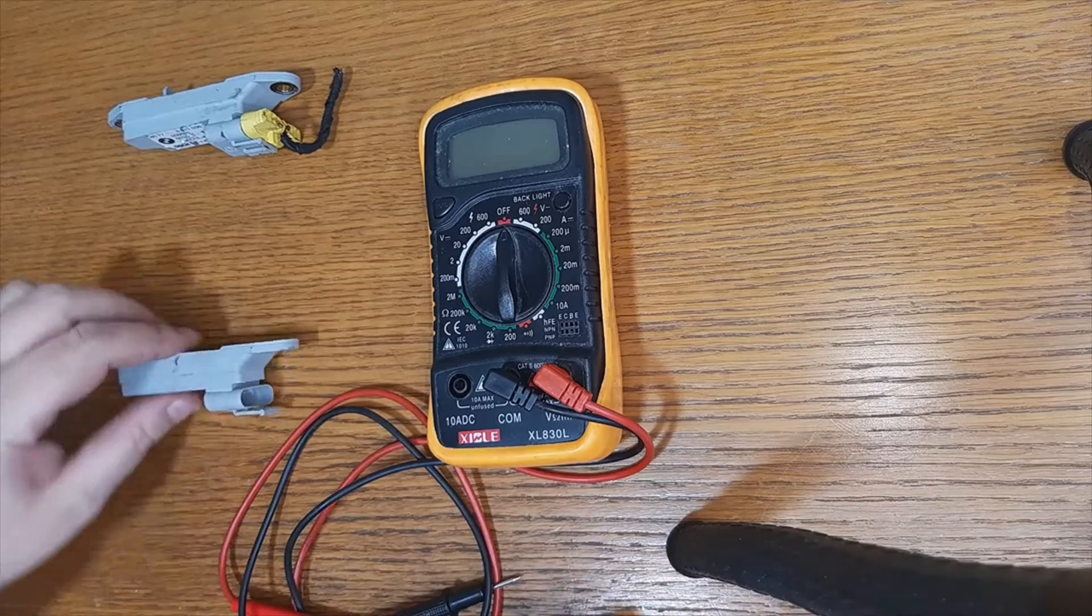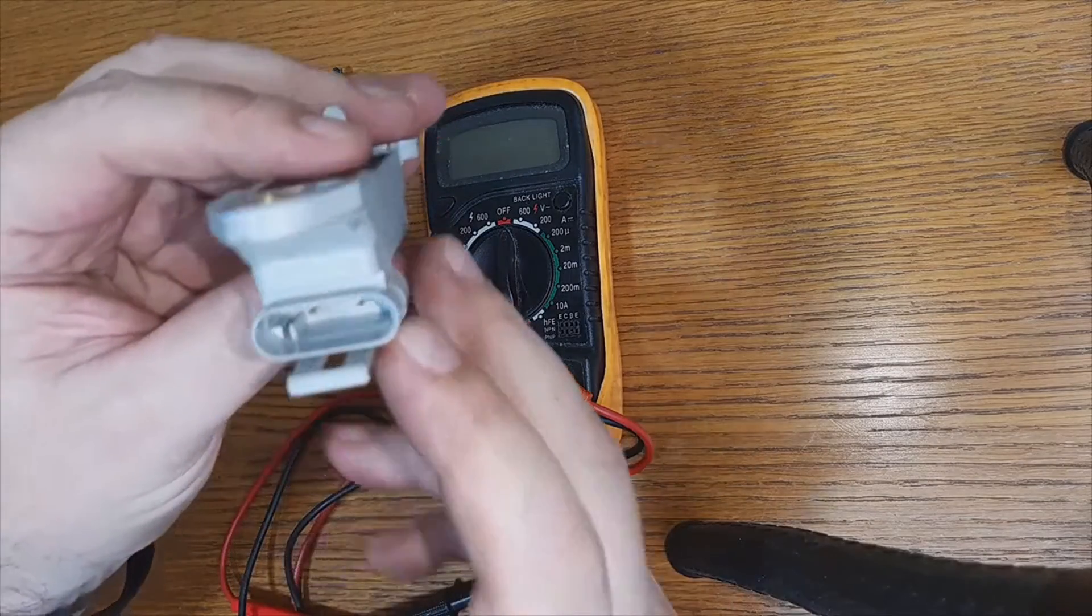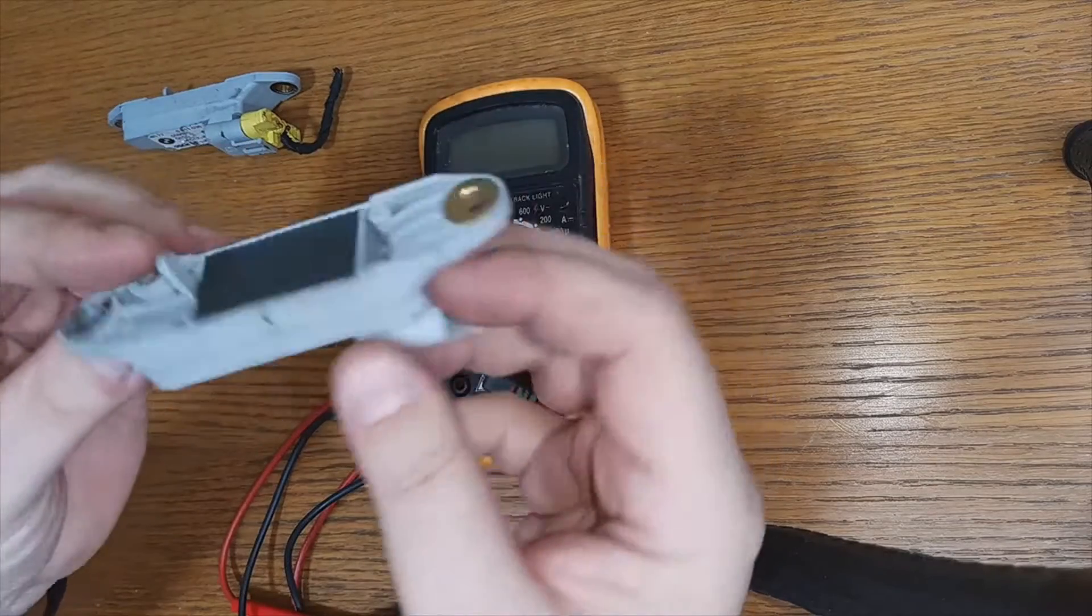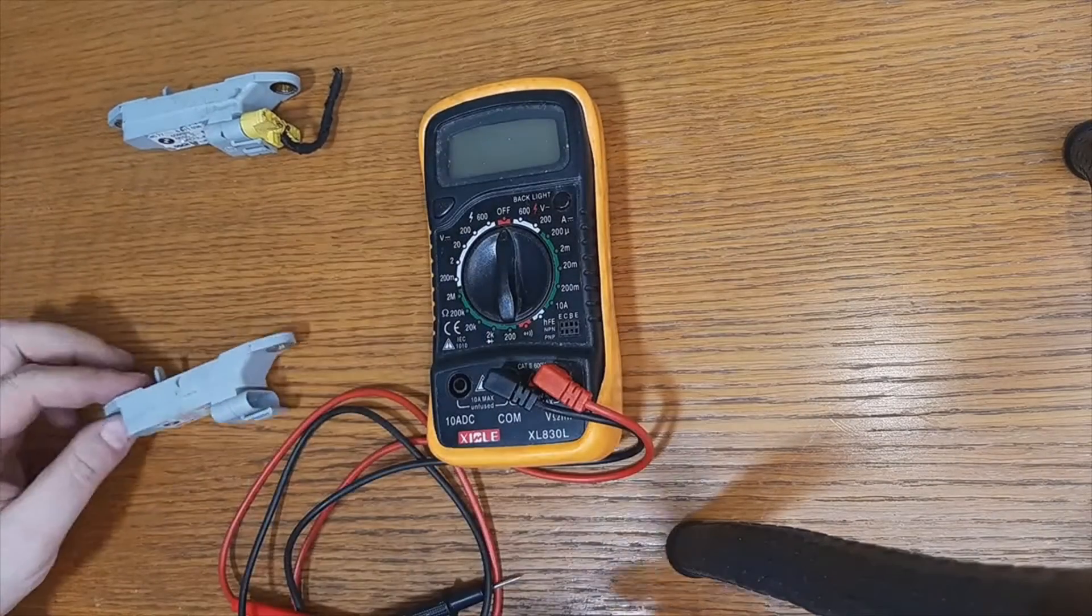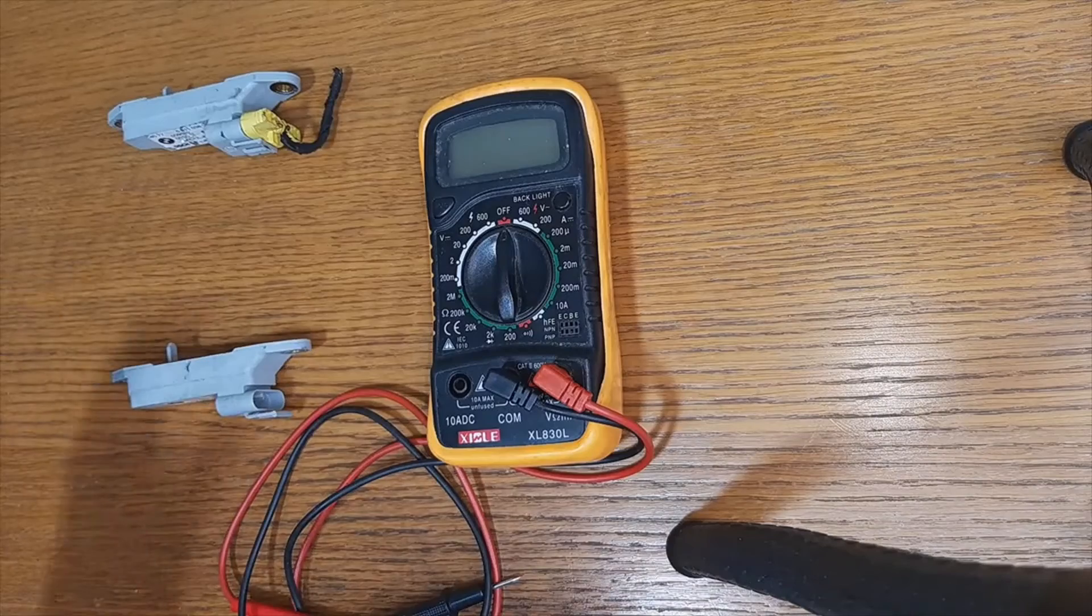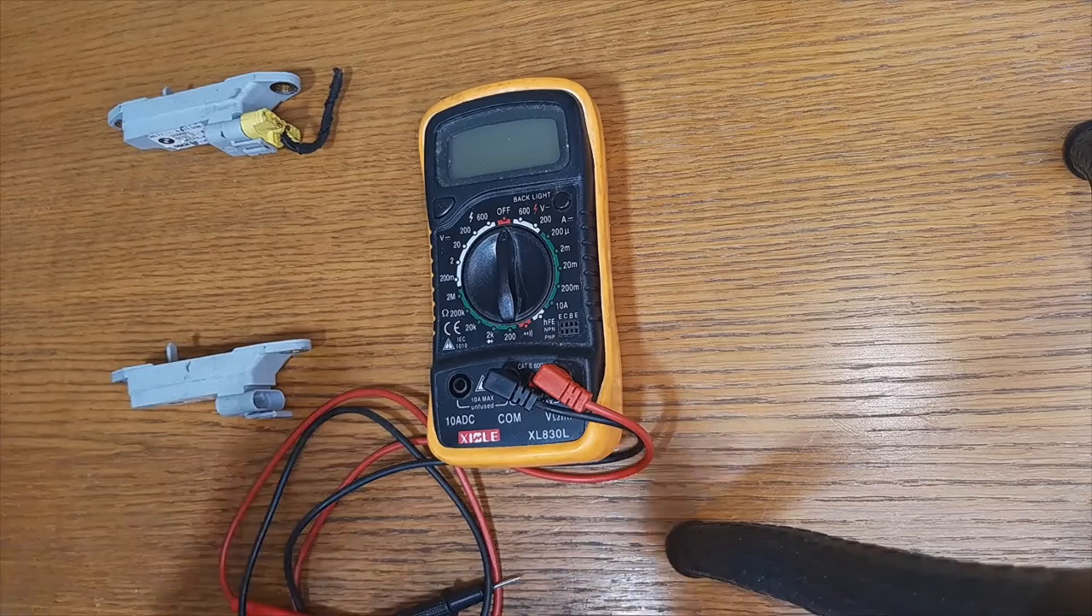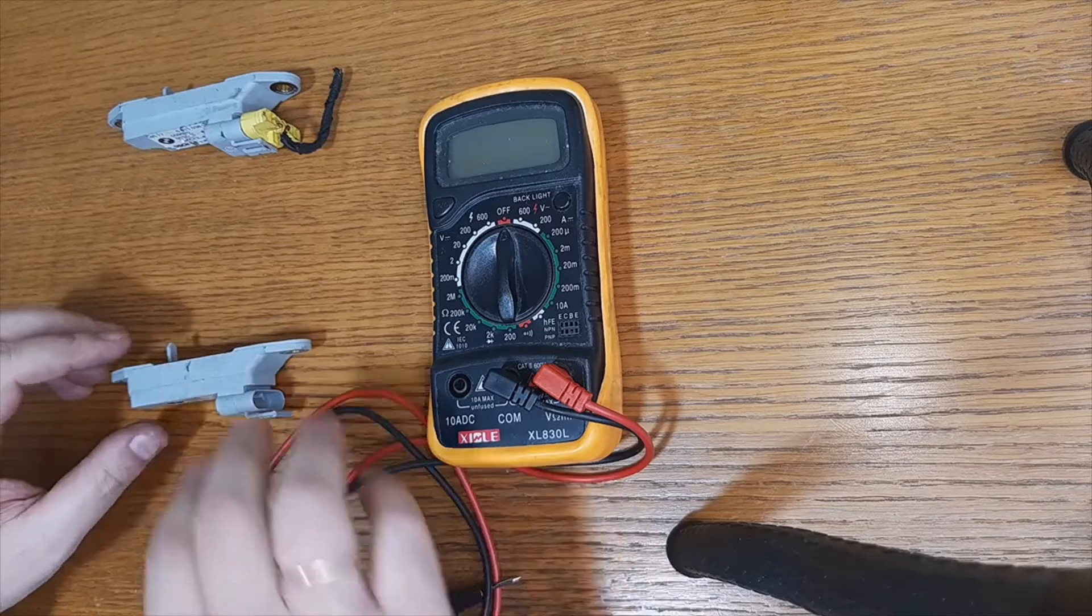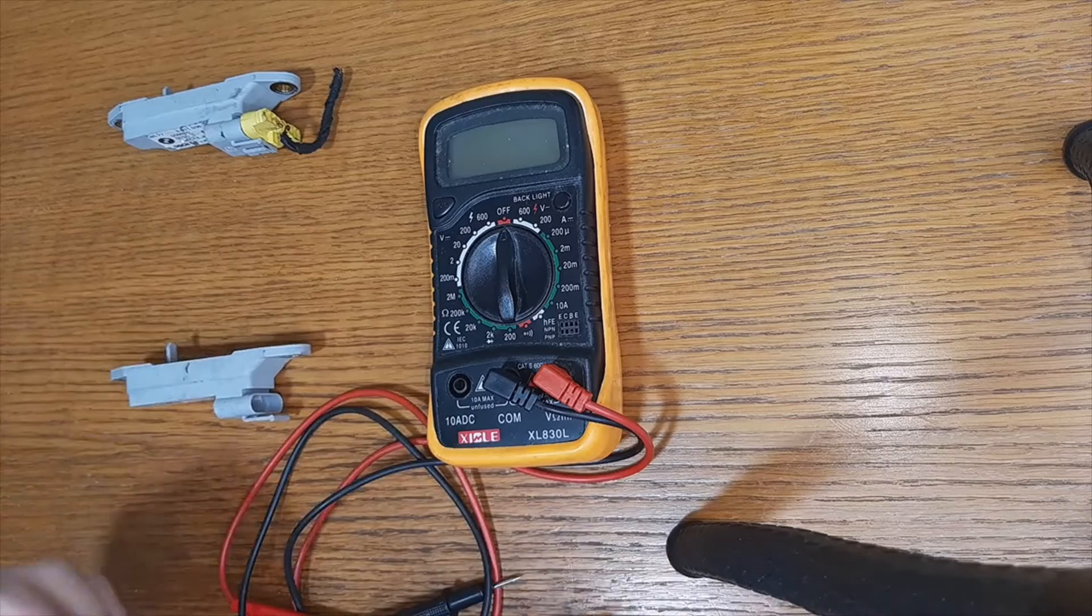These sensors in these cars usually break because they are under the seat. There is one in the driver's seat, there is also another under the passenger seat. Sometimes because of the humidity that reaches them, because the door rubbers crack, water enters them and in the end they end up breaking down.